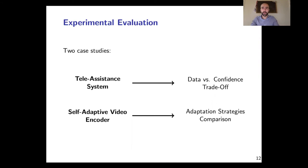Let's see now how the practical implementation of our testing approach looks like. In the paper, we have two case studies: the tele-assistant system and the self-adaptive video encoder. Both are very well known in the field of self-adaptive software. We will use the first one to show how scenario theory exposes a trade-off between the number of tests and the confidence in our testing campaign. We will use the second to show how scenario theory can be used to compare different adaptation strategies.